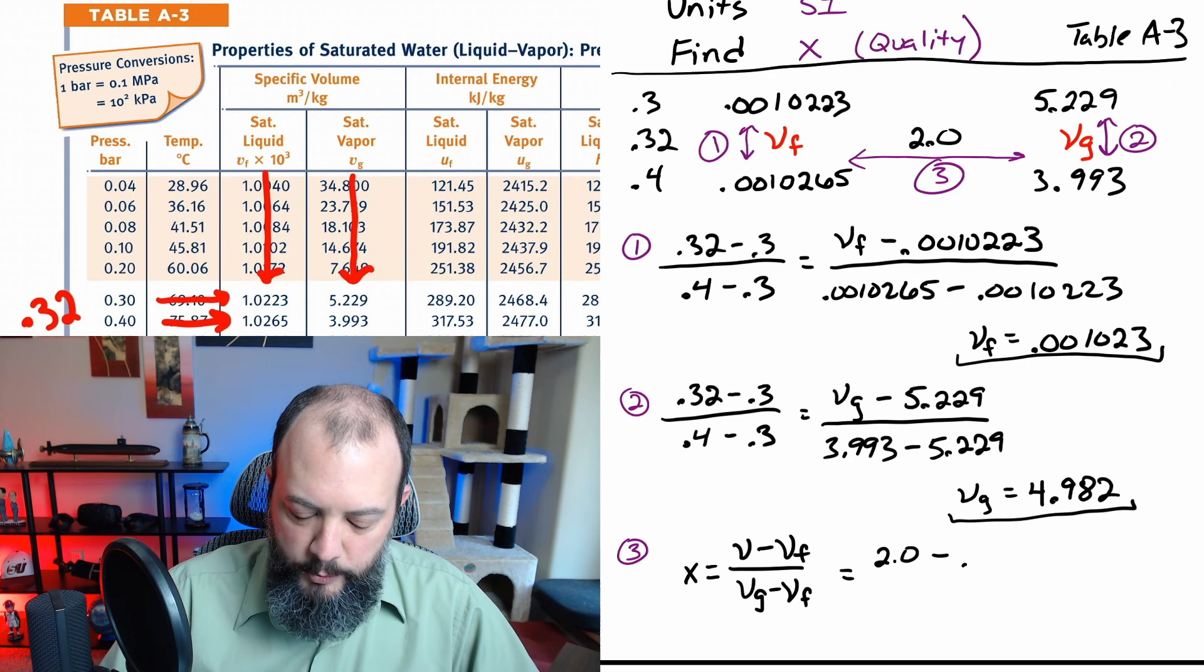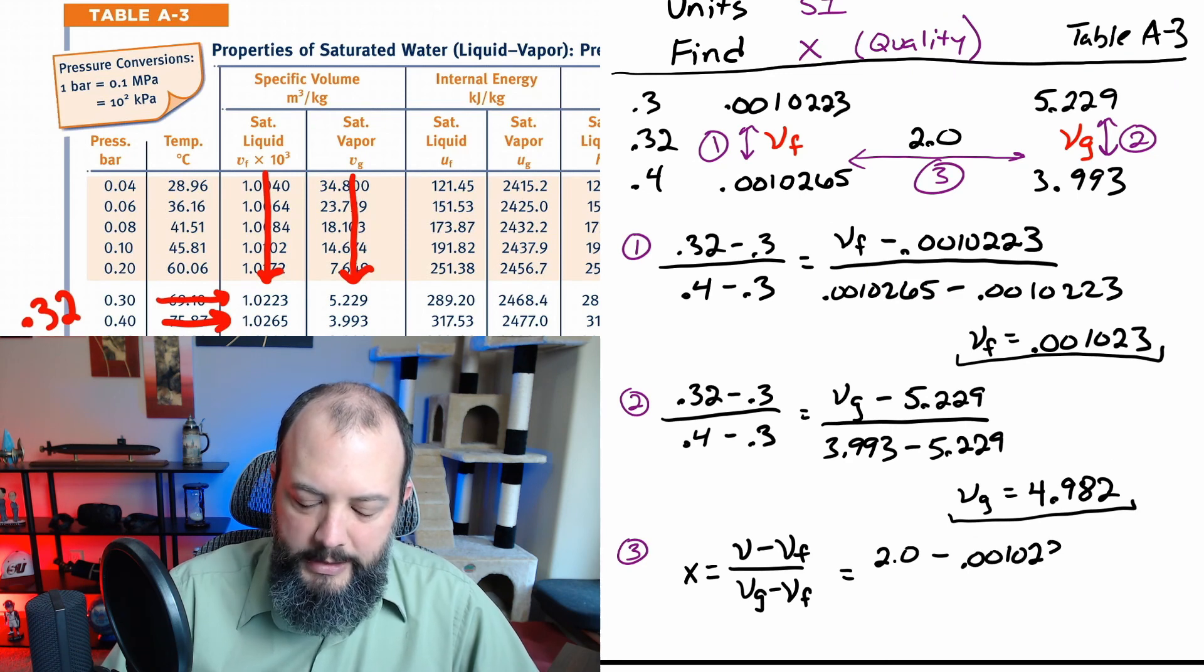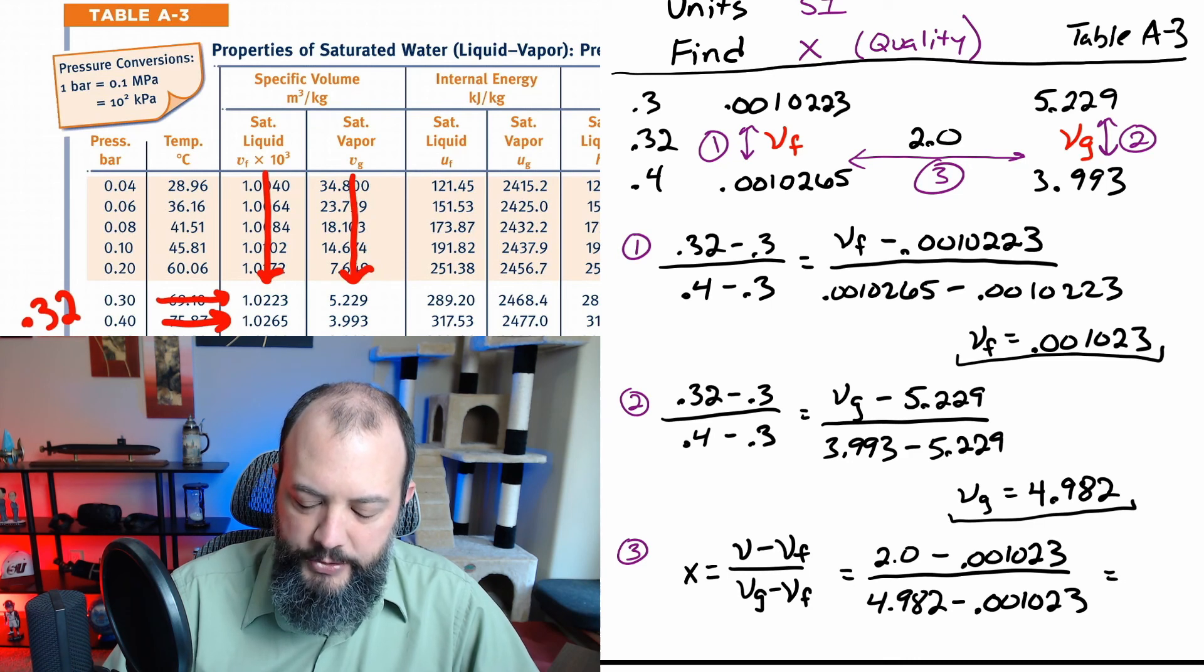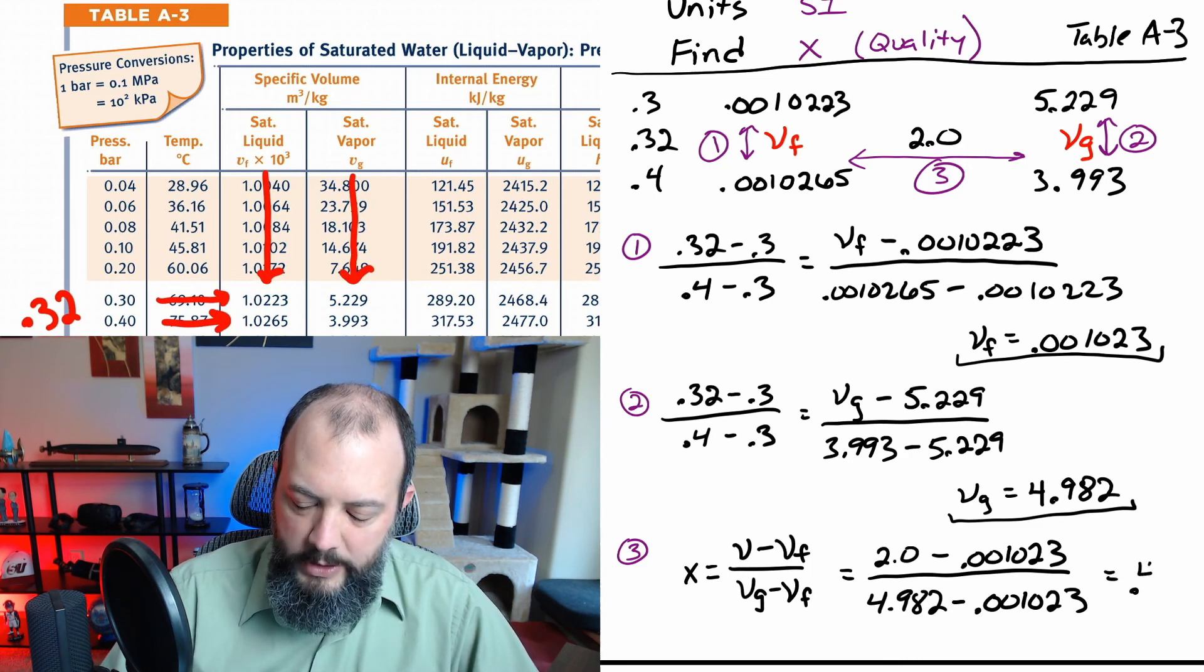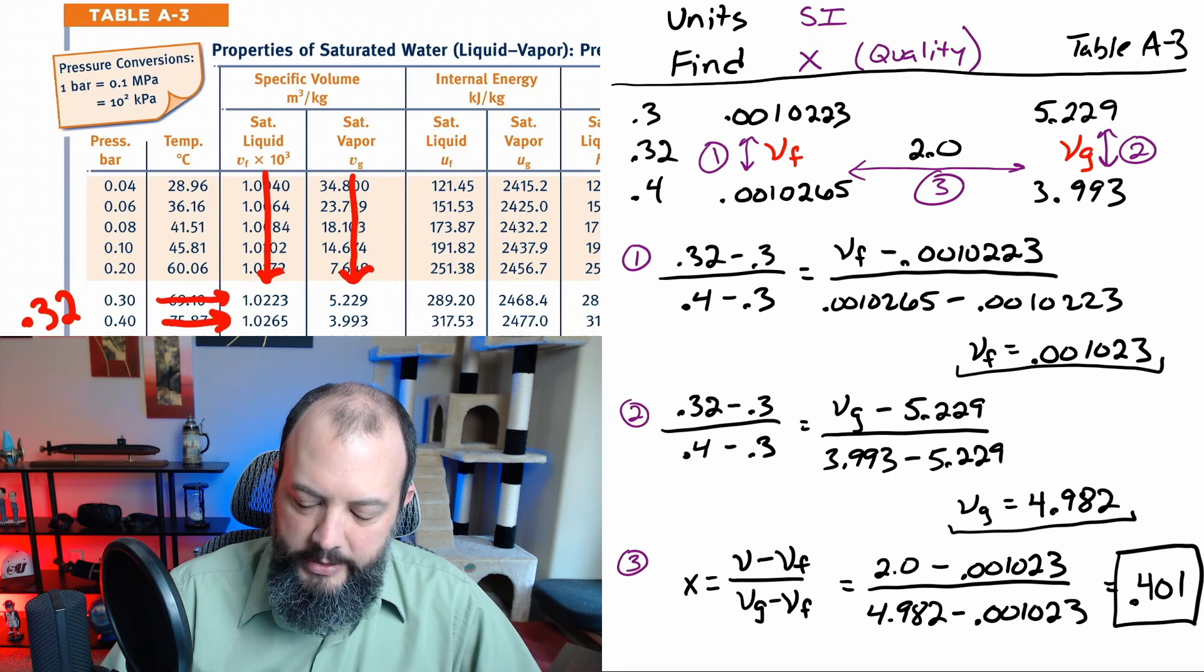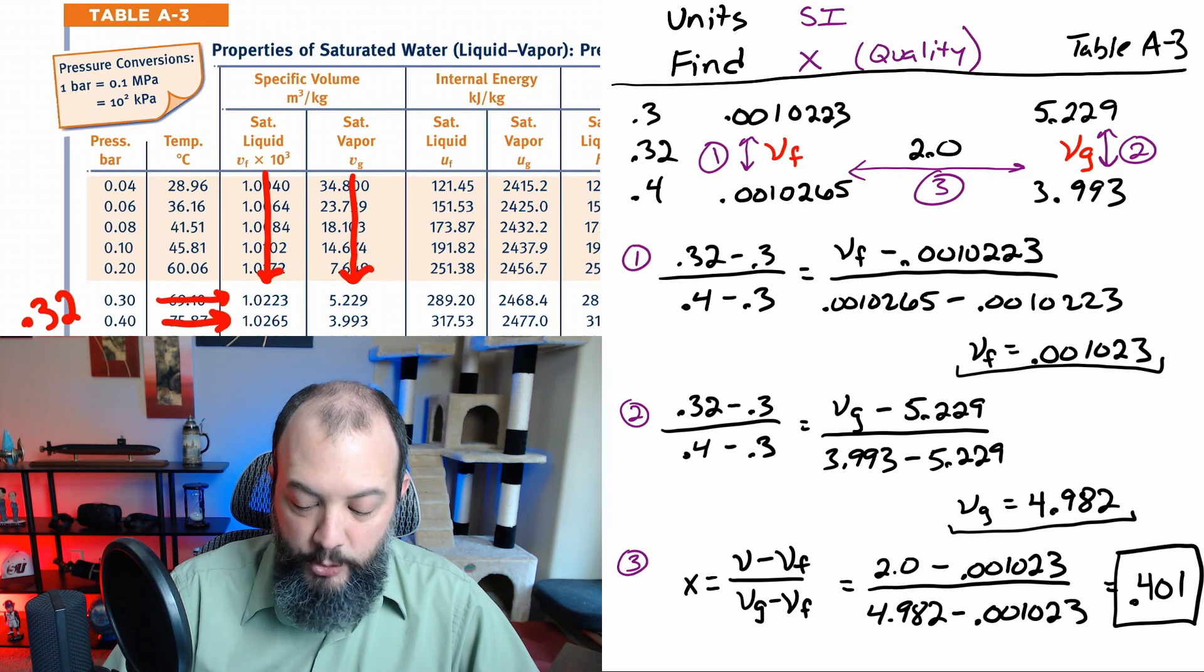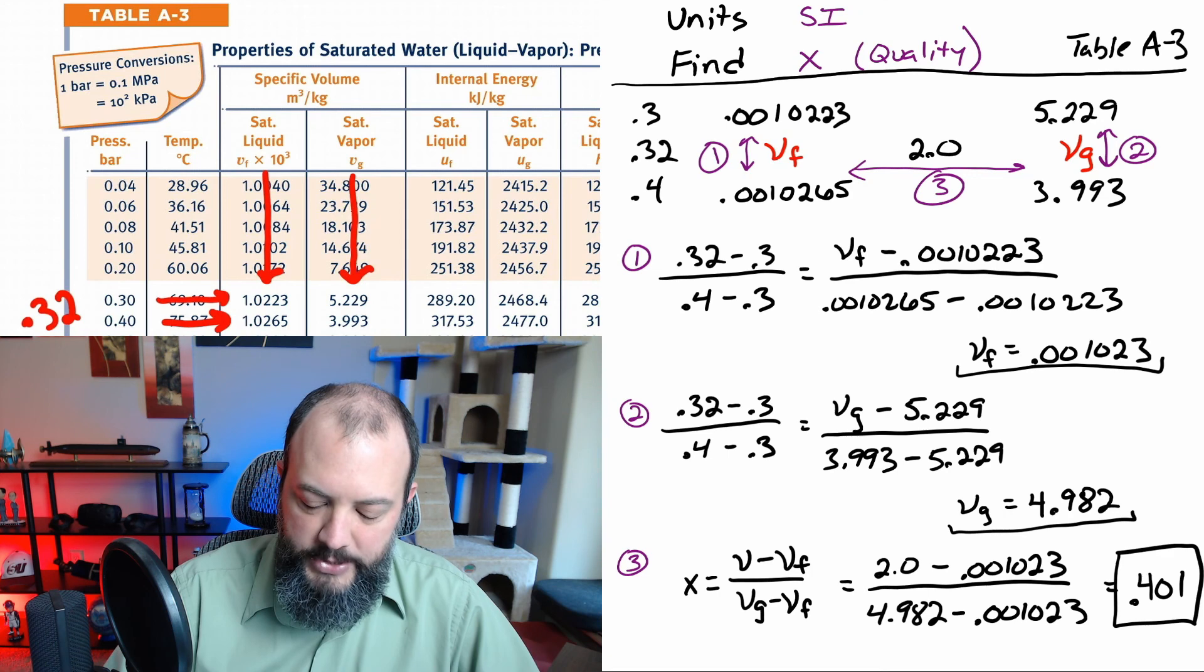And the last step to finish this problem will be to use the quality equation where I set up a ratio with the specific volume that is in the middle on top. And then the denominator is that total gap from saturated fluid all the way to saturated vapor. And we get a quality of 0.401. And checking to see whether this number makes sense, we're comparing 2 to the 0.001 and 4.98. And it makes sense since 0.001 is approximately 0 and 4.98 is approximately 5. 2 should be about 2 fifths of the way from 0 to 5. So an answer of 0.4 seems to make sense.